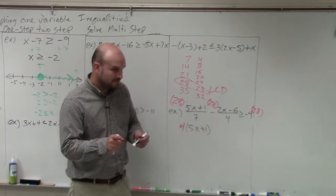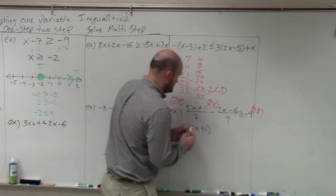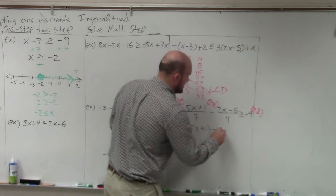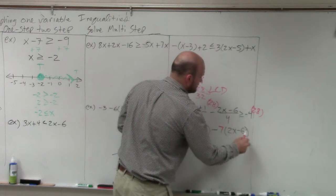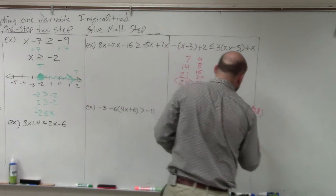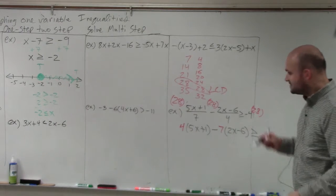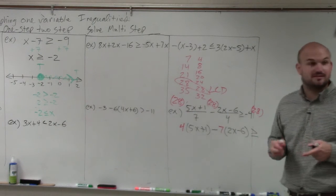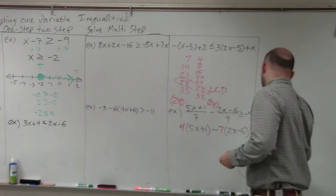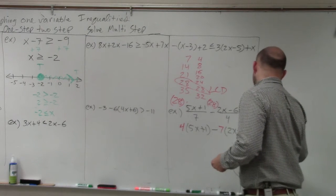How many times? 6 times. Close. One more. 7. So we have minus 7. And then that's going to still be multiplied by 2x minus 6. And then that's going to be greater than or equal to. Negative 4 times 28 is 28. That's going to be 56. That's going to be 112. And that's a negative.